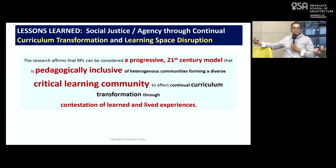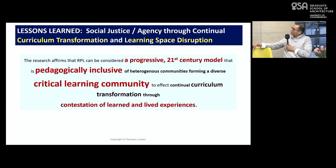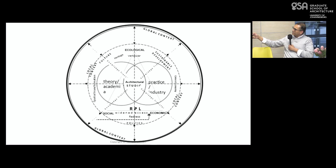At UKZN I run a master's program where there's a full cohort that came via an alternative learning pathway without an honours degree into a master of architecture by coursework. They're coping well and bringing all their practice experience and struggles from communities. I call this the critical learning community — a very inclusive community. RPL sits there as a mechanism for engagement, widened access, spatial transformation and redress.